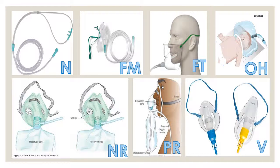These are the types of oxygen delivery systems. Using an acronym: N stands for nasal prong — you can see the prongs for the nose — and you have a face mask, face tent, oxygen hood normally used in pediatrics, non-rebreather mask, partial rebreather mask, and Venturi mask. The non-rebreather mask and partial rebreather mask look similar.